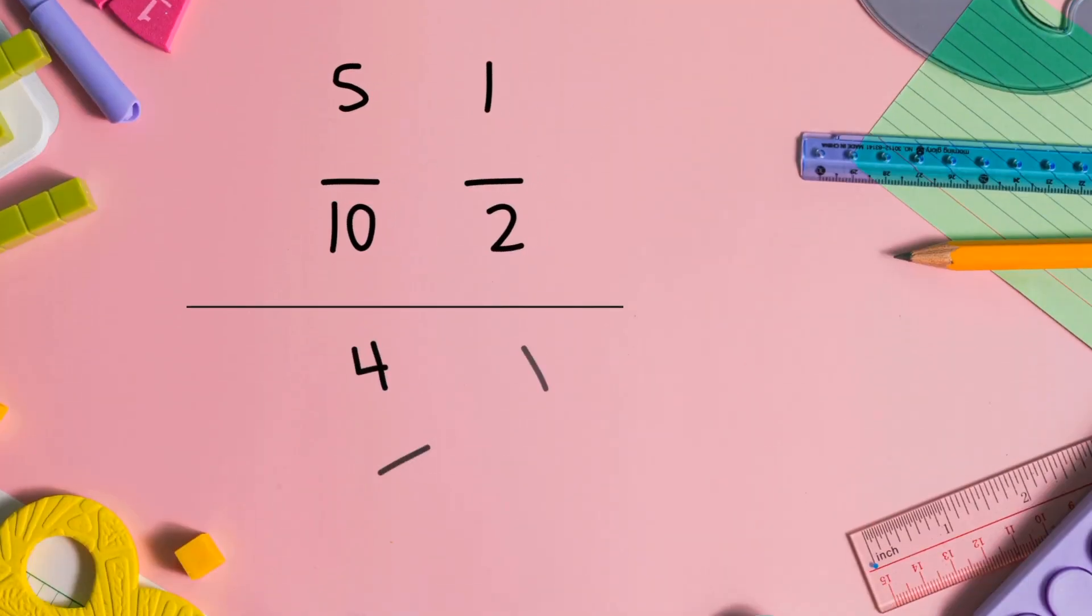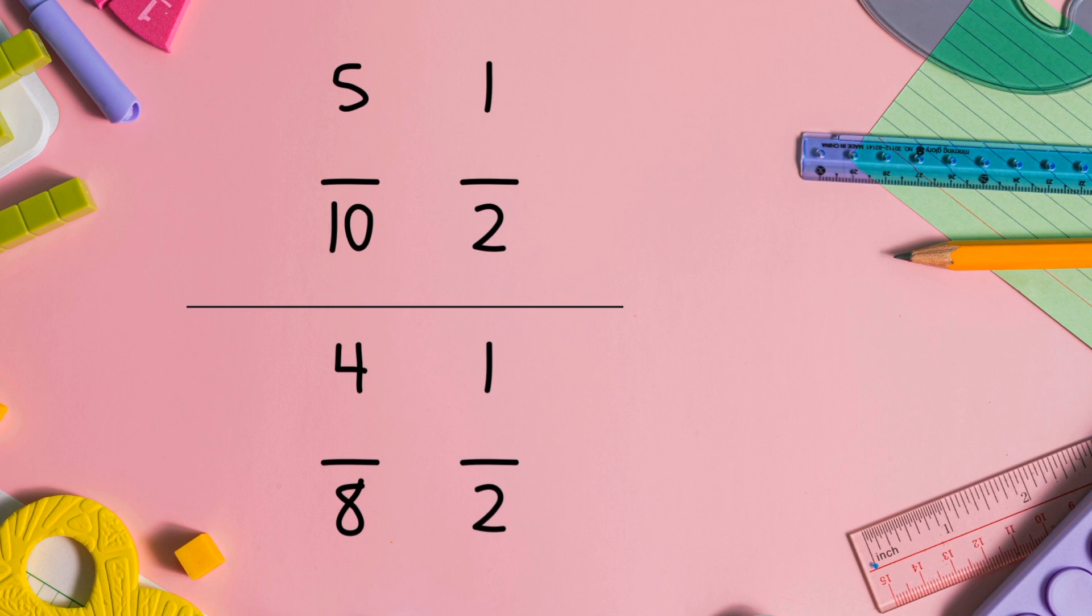This is the easiest way that I found to simplify. Just see if the top number will go into the bottom number. So 5 will go into 10. Yes, times 2. So it's 1 half. Same thing with 4 eighths. It's going to go down to 1 half.